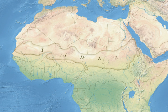Around 4000 BC, the climate of the Sahara and the Sahel started to become drier at an exceedingly fast pace. This climate change caused lakes and rivers to shrink significantly and caused increasing desertification. This, in turn, decreased the amount of land conducive to settlements and caused migrations of farming communities to the more humid climate of West Africa.